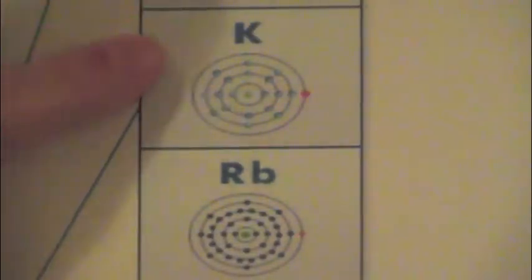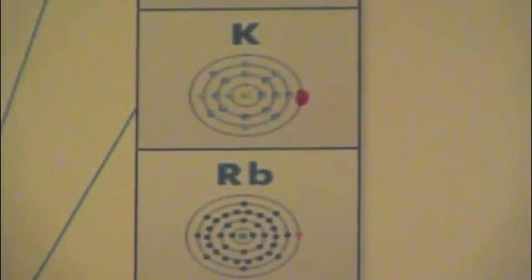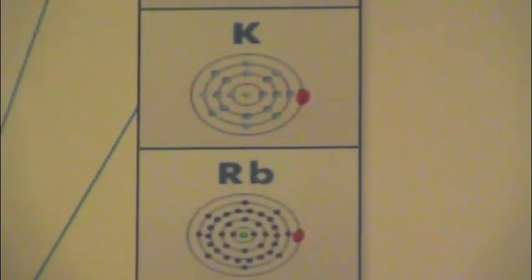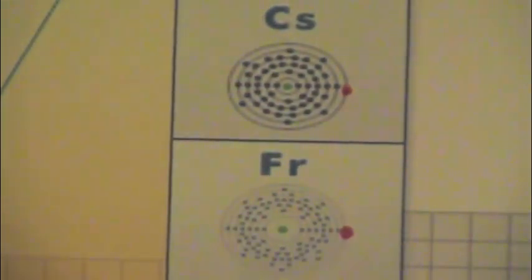Here is potassium and rubidium. They are also in the first column of the periodic table. Potassium has one valence electron, and rubidium also has one valence electron. They are both highly reactive. Now we are looking at cesium and francium, and each have one valence electron. They are also highly reactive.